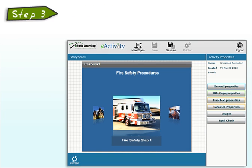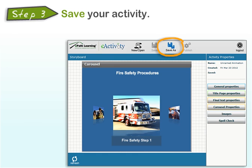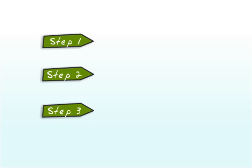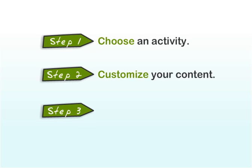Now that your content is in place, it's time for step 3. Save your file and you're done. You can even go back and access all of your saved activities at any time to make changes. See? It really is as easy as 1, 2, 3 — choose an activity, customize your content, and save.